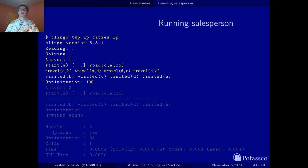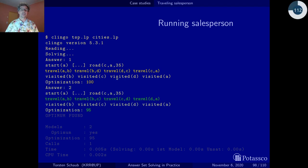What branch and bound now does is to add a constraint that says that the next solution must be better than 100 and then the whole system is launched again. This happens automatically within clingo and a second answer is obtained and here we travel from a to b from b to c then to d and then back to a and here we get a better value so our route is only 95 kilometers long and this is better.